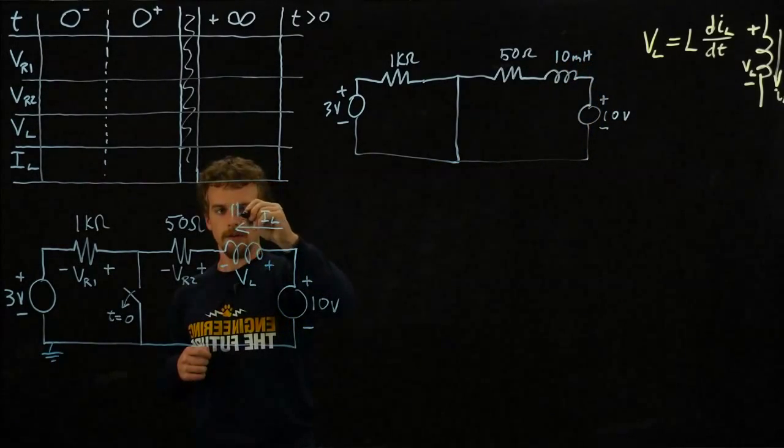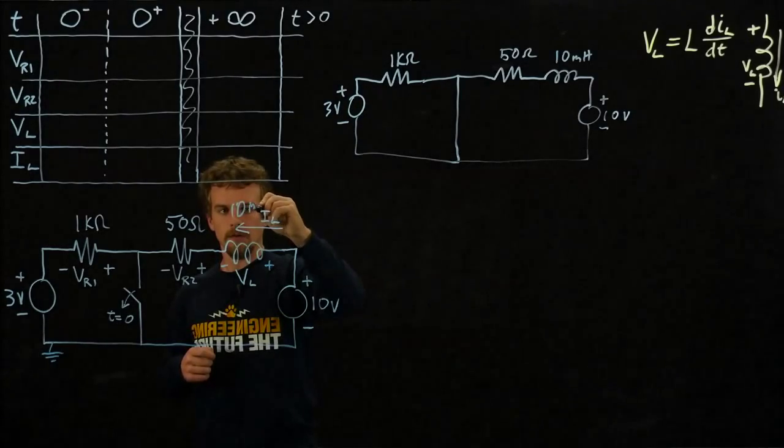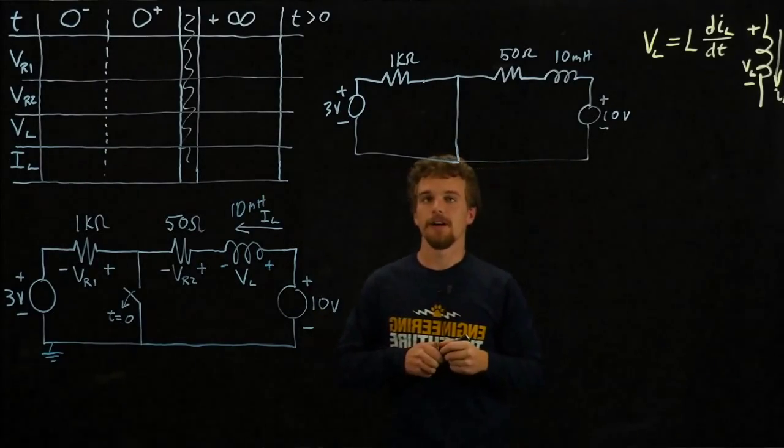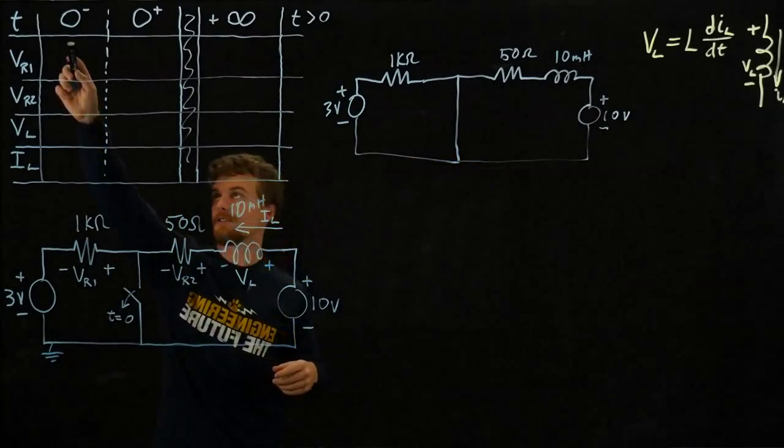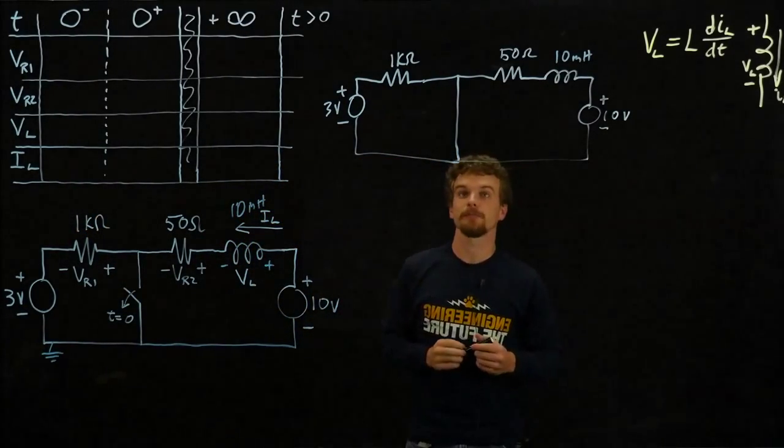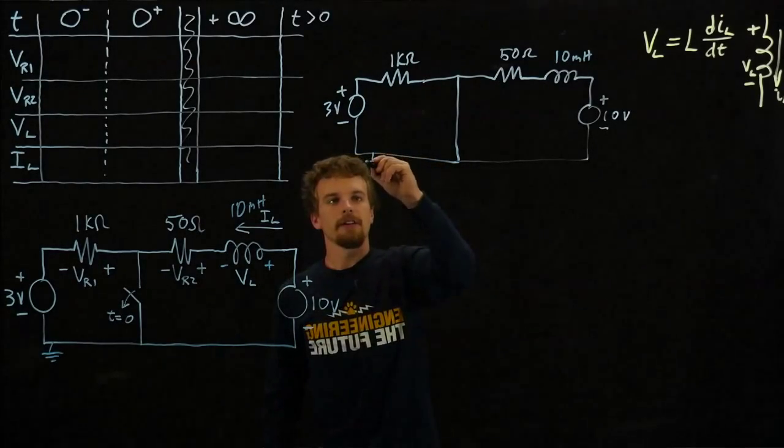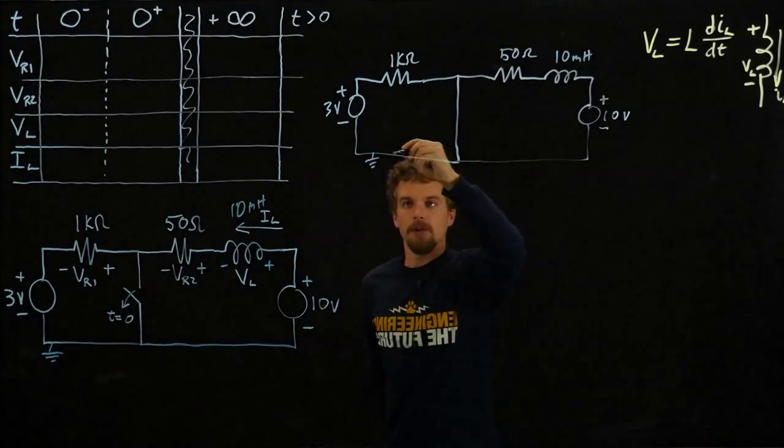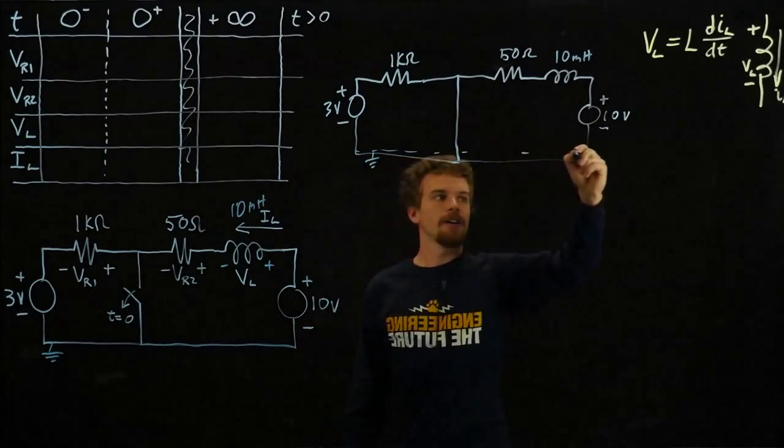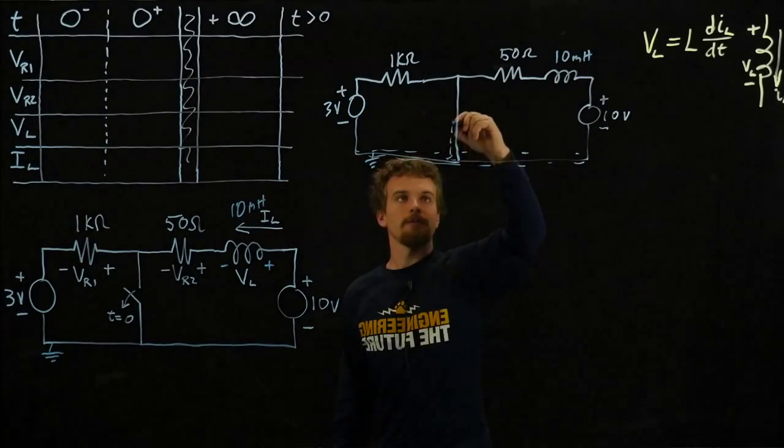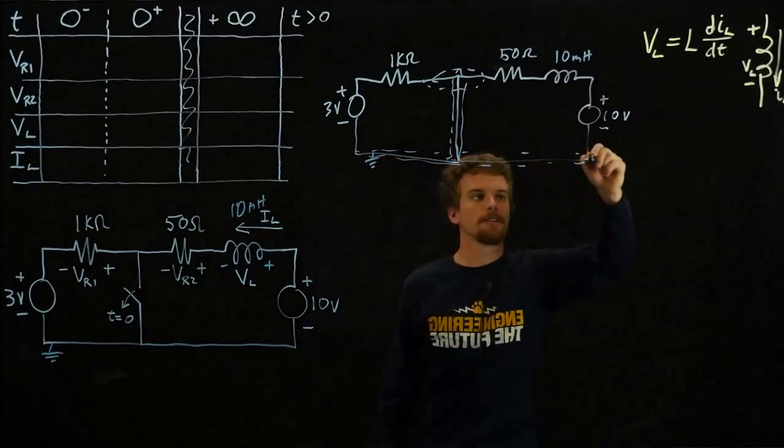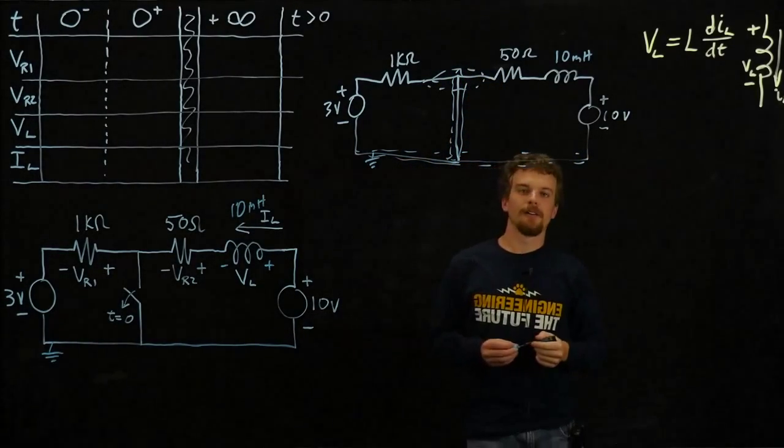Let's see what's going on in the circuit and see if we can come up with any of these values for this column right before the change happens. We're calling this node ground. When this switch is closed, this is all a node right here. There's nothing in between, and the entire thing is a node at v equals zero.